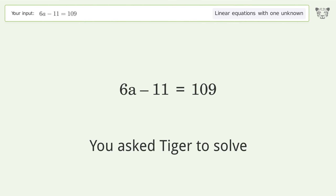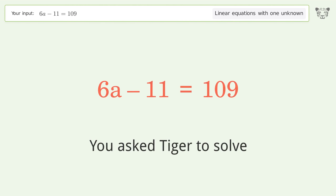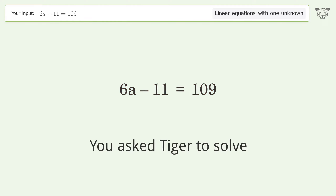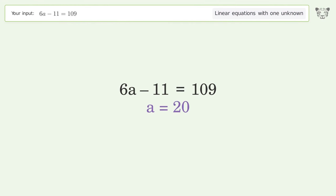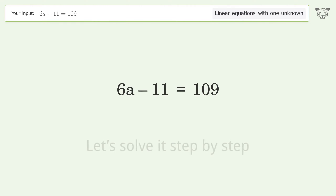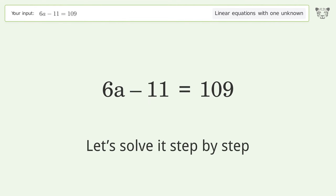You asked Tiger to solve this. It deals with linear equations with one unknown. The final result is A equals 20. Let's solve it step by step.